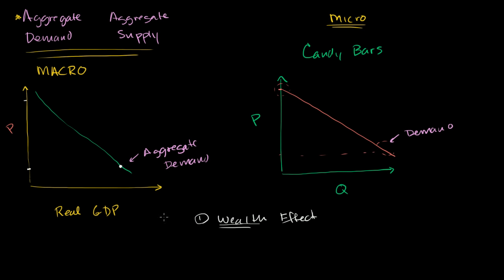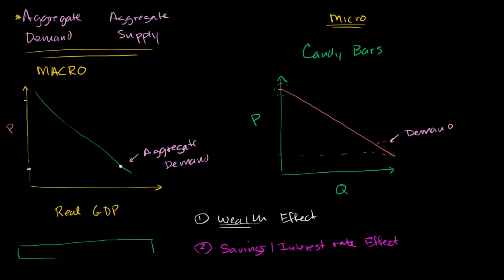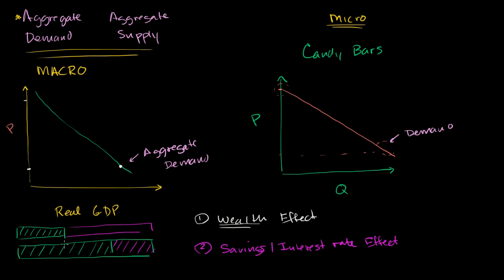The second theory is related to interest rates — I'll call it the savings and interest rate effect. If before this bar represented the total amount of money someone had, and this portion is how much they needed to spend on goods and services for a happy productive life, and the rest was savings — now if things get a lot cheaper, they don't have to spend as much on goods and services. They could spend less and save much more. When people save money, it goes into the financial system and gets lent out to other people.